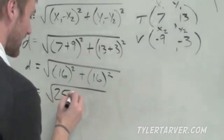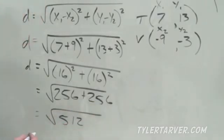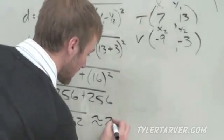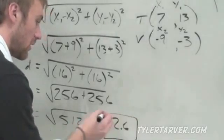16 squared is 256. And we know that one is going to be 256 as well. We add those together, we get 512. And then the square root of 512 is 22.6. It's about 22.6. We rounded it. Hopefully you got that answer, and then all your wildest dreams come true. Bye!